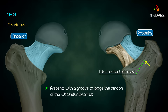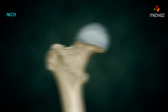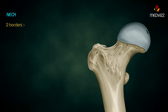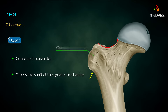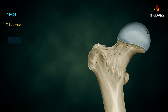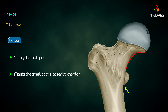The posterior surface of the neck presents with a groove to lodge the tendon of the obturator externus. The neck also has two borders: the upper border, which is concave and horizontal and meets the shaft at the greater trochanter; and the lower border, which is straight and oblique and meets the shaft at the lesser trochanter.